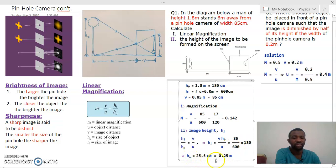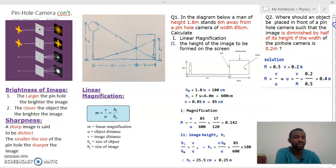Now let's look at our second question, which is: where should an object be placed in front of a pinhole camera such that the image is diminished by half of its height, if the width of the pinhole camera is 0.2? In the previous question, I didn't pay attention to this width here. Realize that the width of the pinhole camera is the same as the image distance.